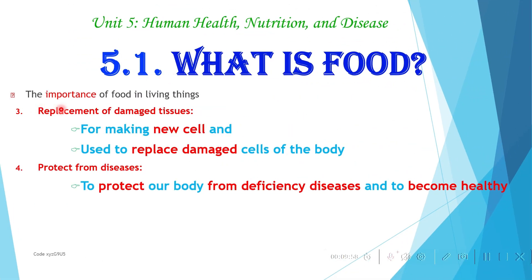The third importance of food is the replacement of damaged or worn-out tissues and cells. There must be food to replace damaged or worn-out cells. Our cells become old and damaged over time and must be replaced. For example, red blood cells have a lifespan of around 120 days; after that, they die and must be replaced. This replacement is possible when you have proper food.